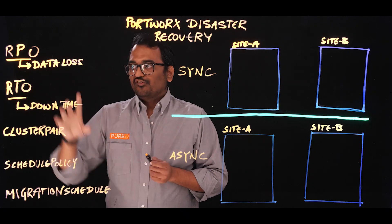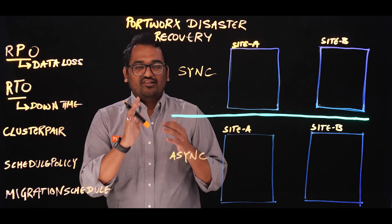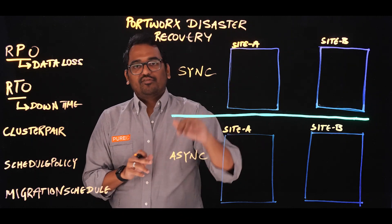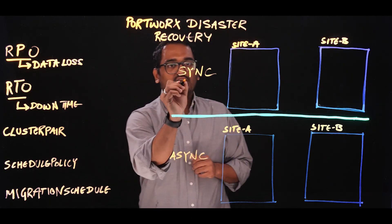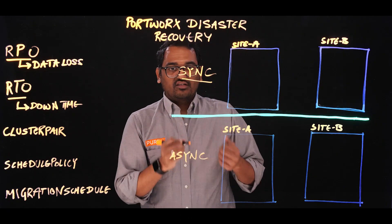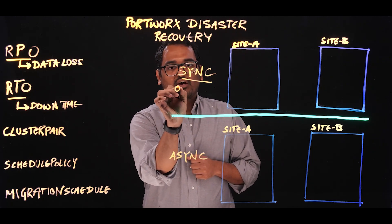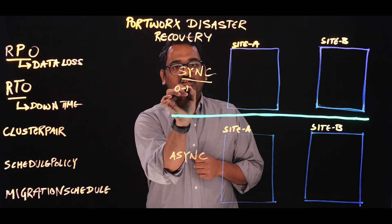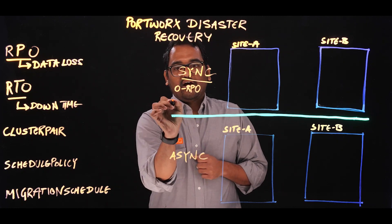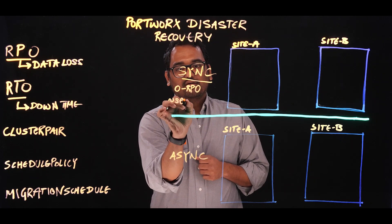When we are talking about building disaster recovery solutions, there are a couple of different models you can follow. The first one is synchronous DR, or synchronous disaster recovery. This is where you have a requirement of zero RPO and an RTO requirement of maybe a few seconds.